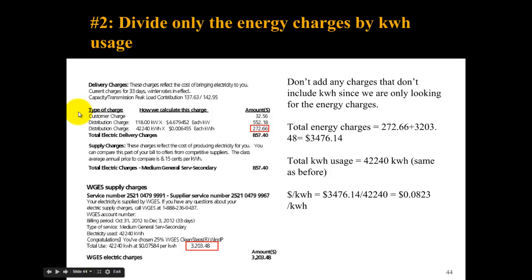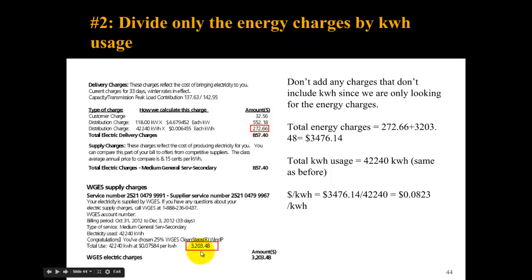This is because the solar panels may not decrease the peak demand. The 118 represents the peak demand for the month, and your solar panels may not be generating during that peak. So we use this conservative way of estimating our cost per kilowatt hour. We take the energy charges — anything charged per kilowatt hour — which is $272.66, and the supply charges of $3,203.48. Totaling up only the energy charges and keeping the same total kilowatt hour usage gives us 8.23 cents per kilowatt hour.